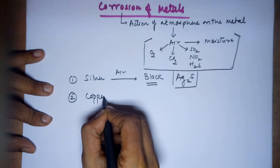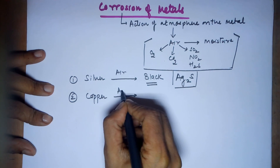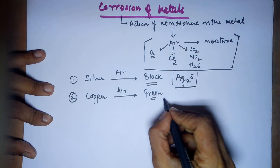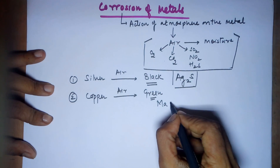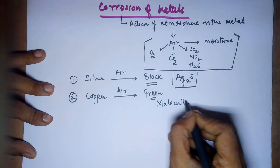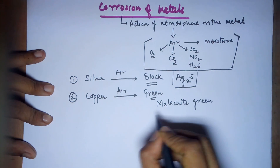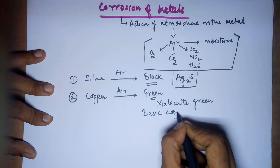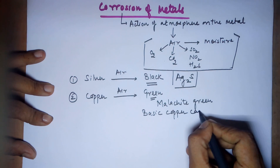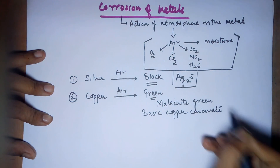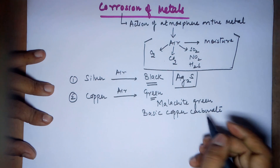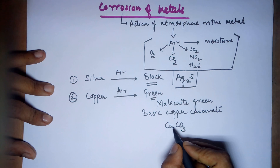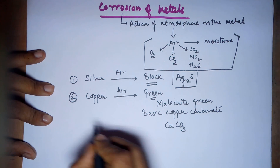The second commonly observed example is copper metal. If copper metal is exposed to air, it turns green. This green compound is also called malachite green, and it is actually basic copper carbonate which is formed.